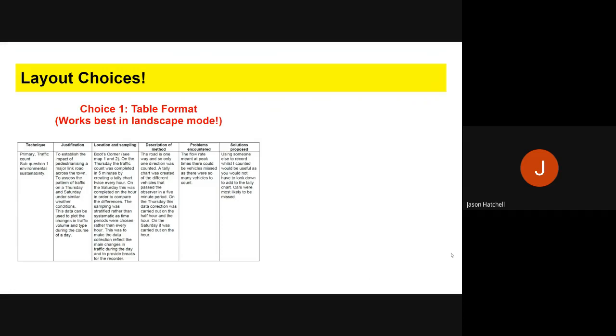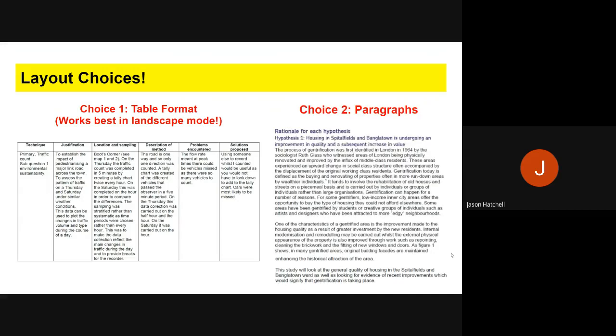The other option is paragraph format. For paragraph format, you have the same thing as choice one, but you write it in paragraph format without using a table. For both, you need to include the technique, the justification, the location, the sampling, a description, a justification, and finally problems and solutions.